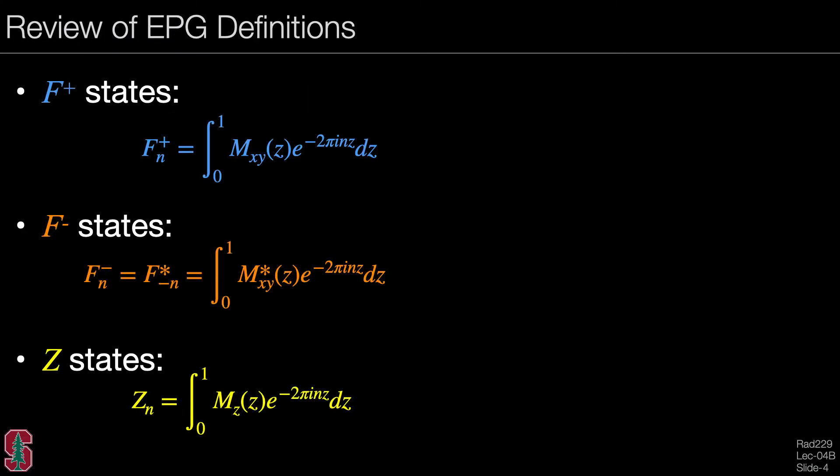Let's start by reviewing the EPG definitions, as you saw in the last lecture. The easiest definitions for this formulation are given by the forward Fourier transform integrals, as shown here.